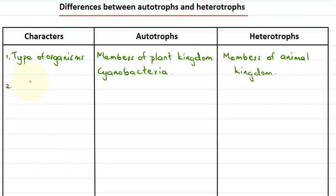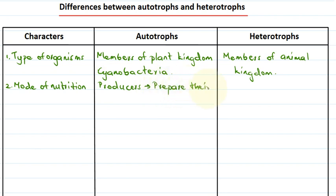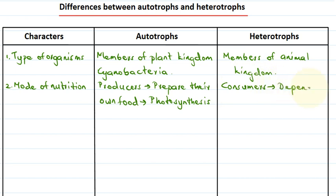The second character is the mode of nutrition. Autotrophs have an autotrophic mode of nutrition — they are producers, which means they prepare their own food and do not depend on other organisms for obtaining food. The process by which they prepare their own food is called photosynthesis. Heterotrophs follow a heterotrophic mode of nutrition and they are consumers — they cannot prepare their own food and depend upon other organisms for food.